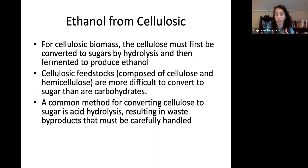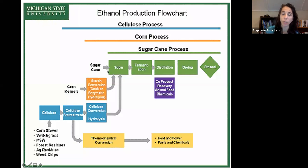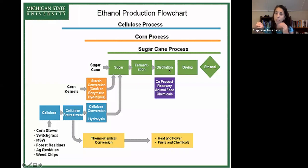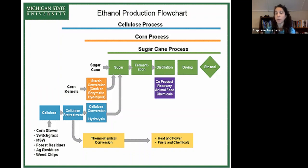For cellulosic biomass, it must first be converted to sugars through a hydrolysis process, then fermented — there's an extra step. These cellulosic feedstocks are composed of cellulose and hemicellulose, which are more difficult to process, and a common method is acid hydrolysis. If we're using sugarcane, we start right at the sugar process, then go through fermentation by yeast, distillation to get ethanol, and drying. Co-products from distillation — leftover proteins — can be used for animal feed, electricity, or biogas.